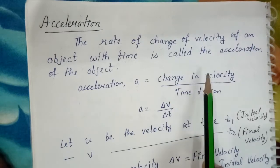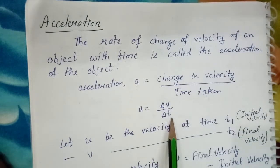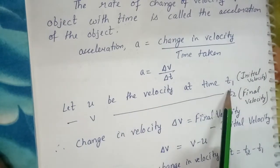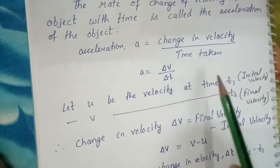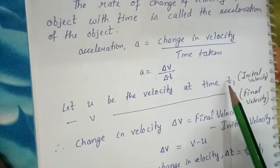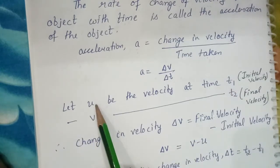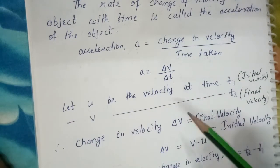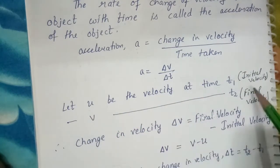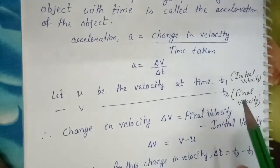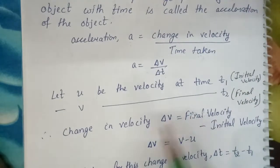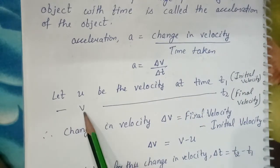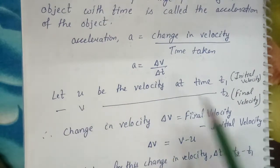How much the velocity is changed in what time — that is known as acceleration. I have represented the change in velocity as ΔV, and the time interval in which velocity is changing as ΔT. Now, if I consider U to be the velocity at time T1 — initially you set any time as the initial time — at time T1, let the velocity of the vehicle or any body be U. Since we are considering this initially, we call U the initial velocity, the reference point from where we start.